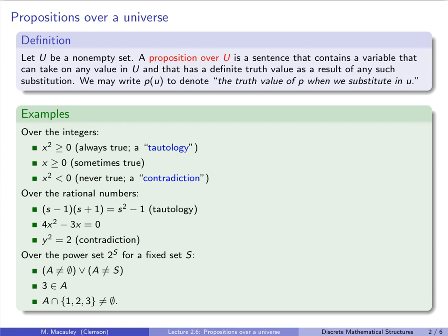We can also ask: is the element 3 in A? That statement is either true or false for any subset A. It doesn't matter whether 3 is in S — if it's not, then it's always false. Finally, the statement 'A ∩ {1, 2, 3} is non-empty' is also either true or false for any fixed subset. All of these are examples of propositions over the power set of S.